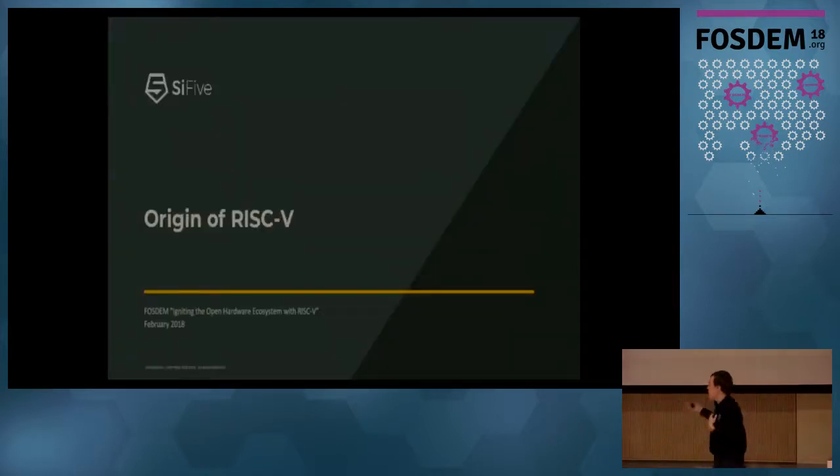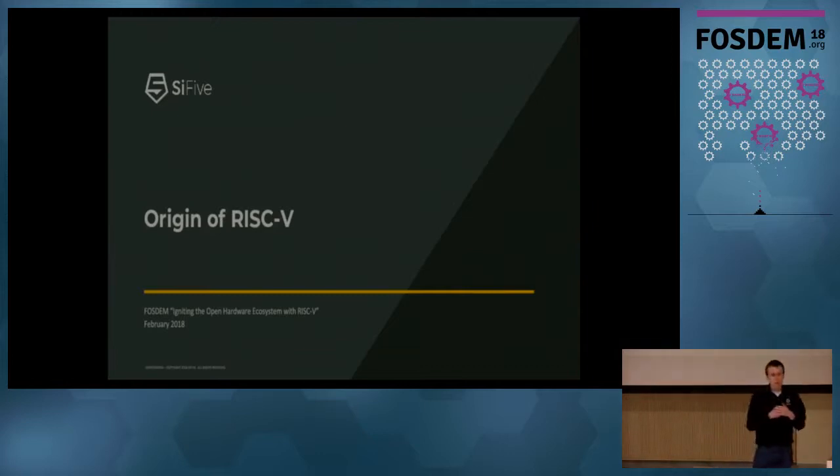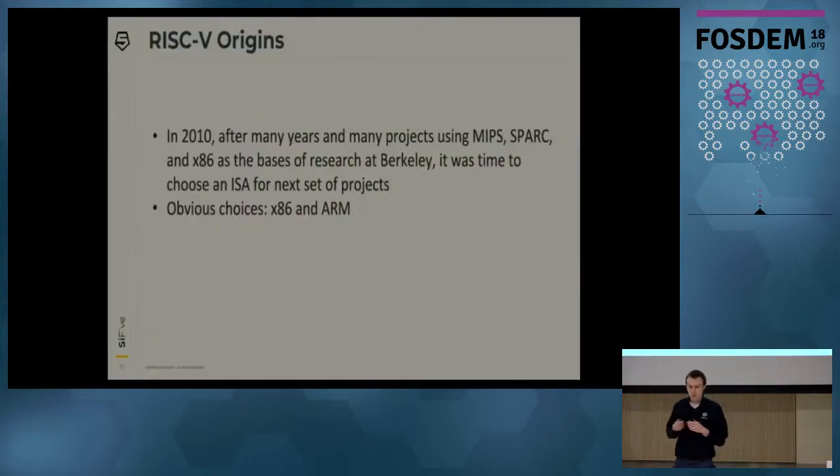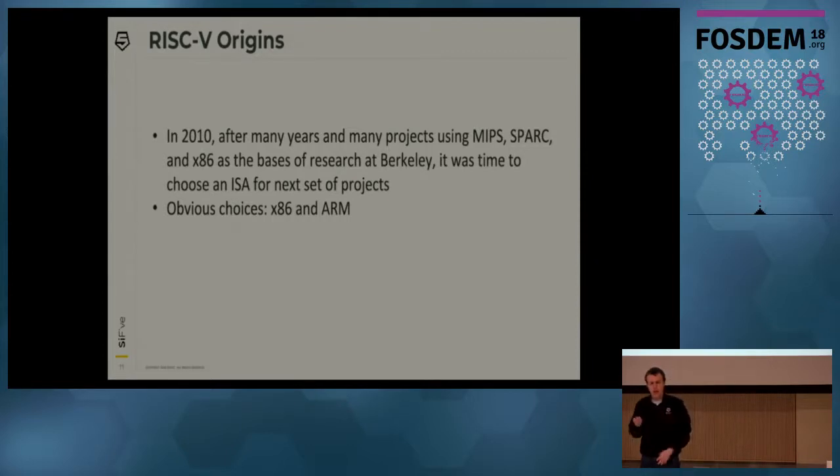Now I'm going to talk about the origin of RISC-V. We've been developing this ISA for about eight years now. So why did we start designing our own ISA? We were at Berkeley, trying to do computer architecture research. If you're going to build a processor, you need an ISA. The only reasonable choices at the time were x86 and ARM.